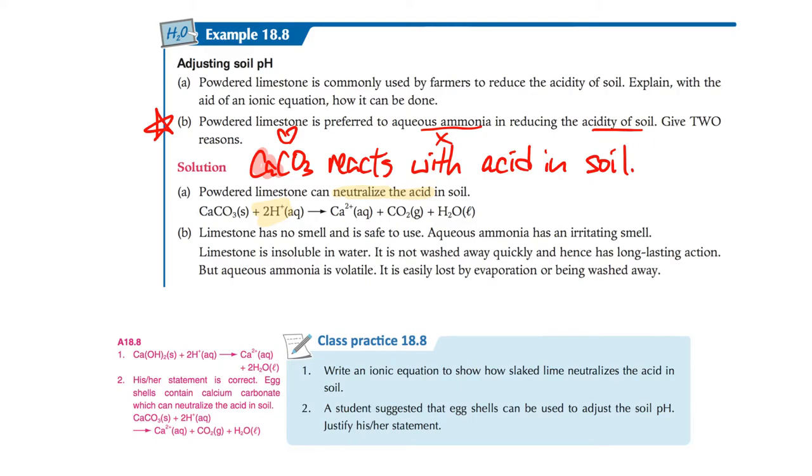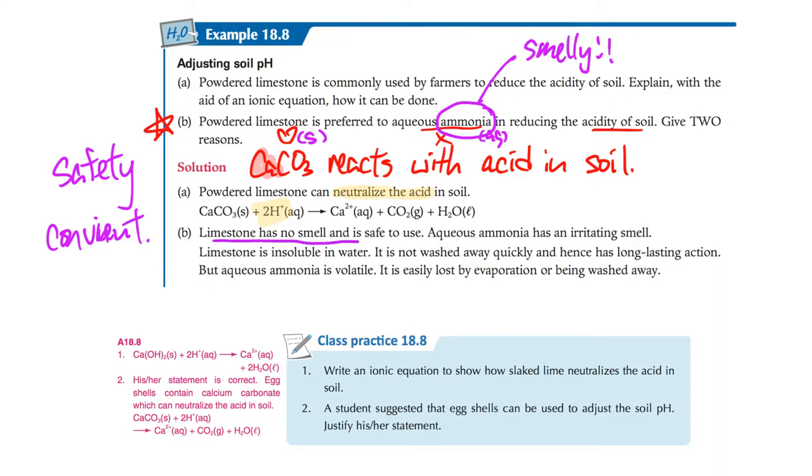Powdered limestone is preferred over aqueous ammonia in reducing soil acidity. When you consider this, think about safety - are you safe when using them? Second, consider convenience. Limestone is solid state while ammonia is aqueous. Which is more convenient? First, ammonia has a big problem - it must be smelly. Ammonia smells like urine. If you pour ammonia into soil, you may have a urine smell. No good. Limestone is solid with no smell at all. That's safer and no smell for limestone, but aqueous ammonia has an irritating smell, so it's not good to use.